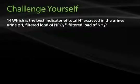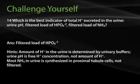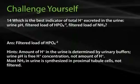Question 14: Which is the best indicator of total hydrogen excreted in the urine — urine pH, the filtered load of hydrogen monophosphate, or the filtered load of ammonia? The answer is the filtered load of hydrogen monophosphate. Urine pH reflects free hydrogen concentration, not the total amount. Most ammonia is synthesized in proximal tubule cells, not filtered. Therefore, the filtered load of hydrogen monophosphate gives the best indicator of total hydrogen excreted in the urine.